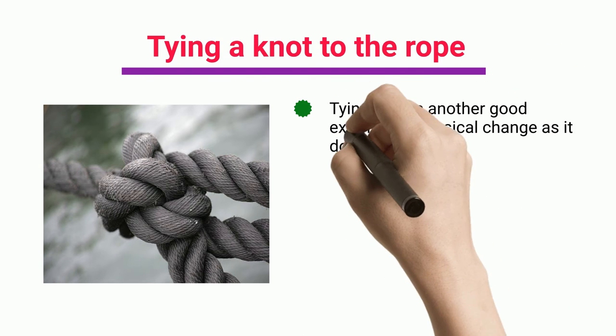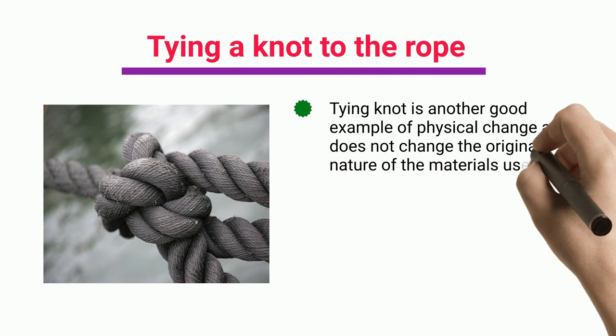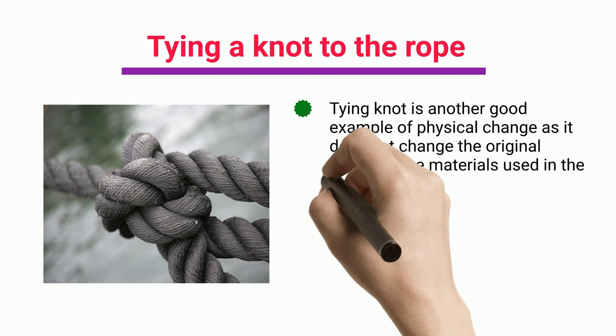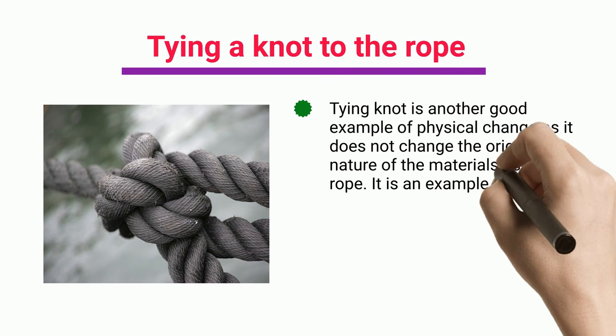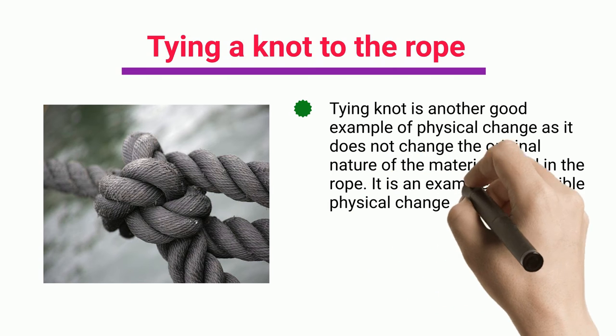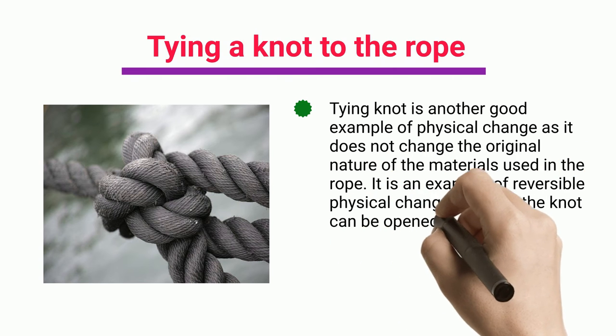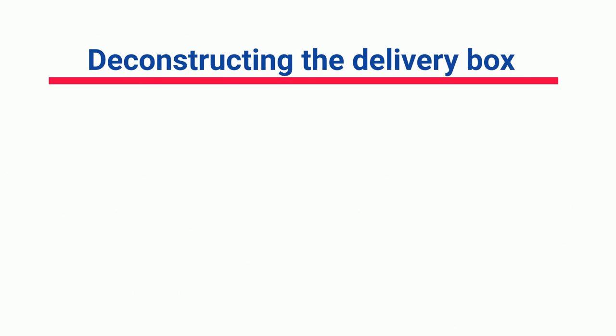Tying a knot to a rope: tying a knot is another good example of physical change, as it does not change the original nature of the materials used in the rope. It is an example of reversible physical change because the knot can be opened anytime.